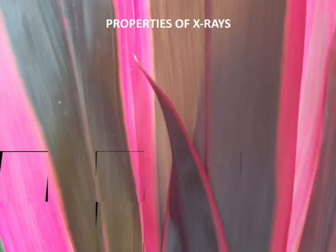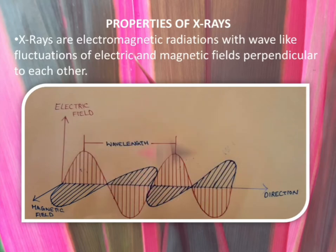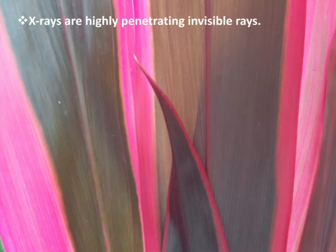X-rays are electromagnetic radiations with wave-like fluctuations of electric and magnetic fields perpendicular to each other. In this picture, the graph denoted by red color indicates the electric field and the graph denoted by blue color indicates the magnetic field. Electromagnetic radiation consists of wave fluctuations of electric field and magnetic field which are perpendicular to each other.